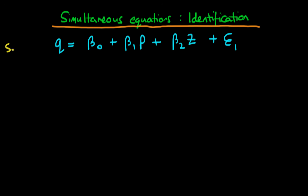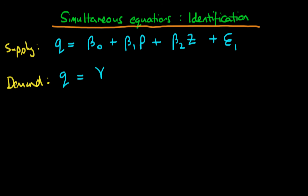This represents a supply equation. And then we have a corresponding demand equation which is quite similar in form. We have that Q, where Q is the quantity demanded, is equal to gamma 0 plus gamma 1 times the price plus some other factors which are contained in the error term epsilon 2.